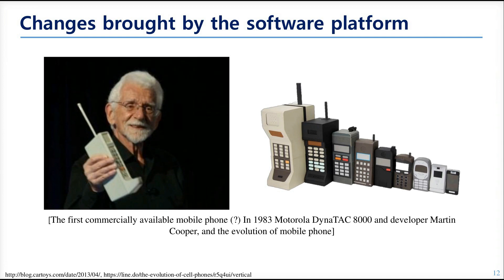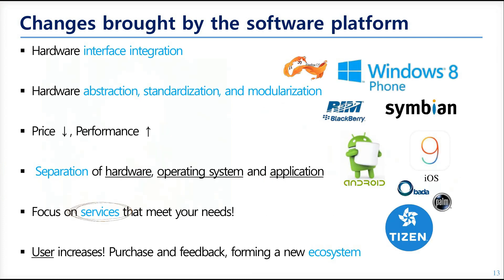Here's an example showing how the mobile phone has changed. While it became smaller and more convenient for carrying, it could become commercially available. All these changes became possible during the revolution of the software platform, or in other words, the operating system. This revolution led to integrating the hardware interface. In the past, every cell phone maker made their own software platform based on their hardware structure and specifications. Now they make the hardware but don't make the software — they just use standardized operating systems. When this happened, hardware abstraction, standardization, and modularization were achieved.